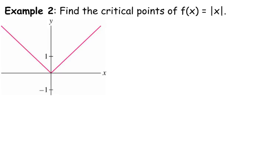So, let's look at example 2. Example 2 asks us to find the critical points of f(x) = |x|. Now, clearly, we can see that this occurs at 0. But, let's use our derivative concept. The derivative of the absolute value. Who can tell me what it is?